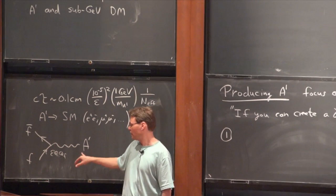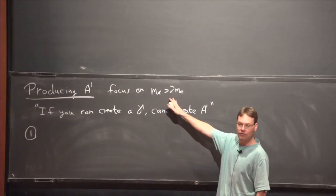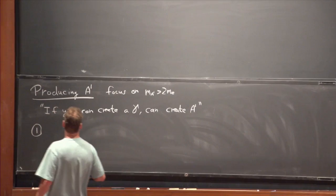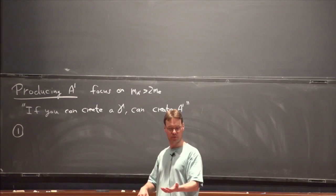We're going to focus on producing the dark photon in the mass range above twice the electron mass, where this formula holds. Basically, if you can create a photon, you can also create a dark photon — that's the basic theme. However we can produce a photon in various interactions, we can imagine producing a dark photon as well, and then look for it in particular ways.